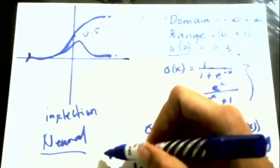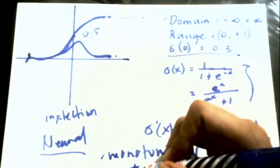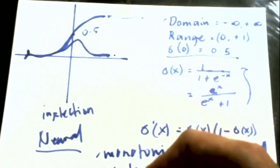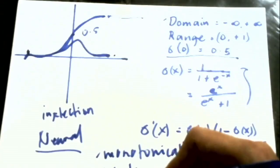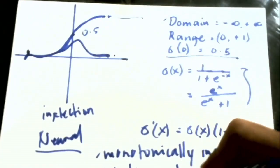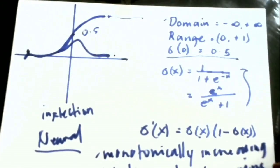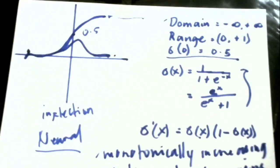And one more thing that we need to understand about sigmoid function is that it is differentiable everywhere in the function. It is differentiable everywhere in the function. Okay what do we mean when we say everywhere? So what do we mean when we say it is differentiable everywhere in the function?